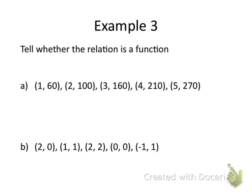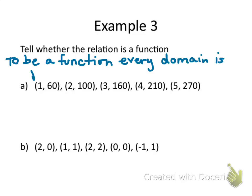So in this example, we want to tell whether the relation is a function. And so, in order to be a function, and I'll write this down now, to be a function every domain is paired with exactly, and this is the key word here, one range.